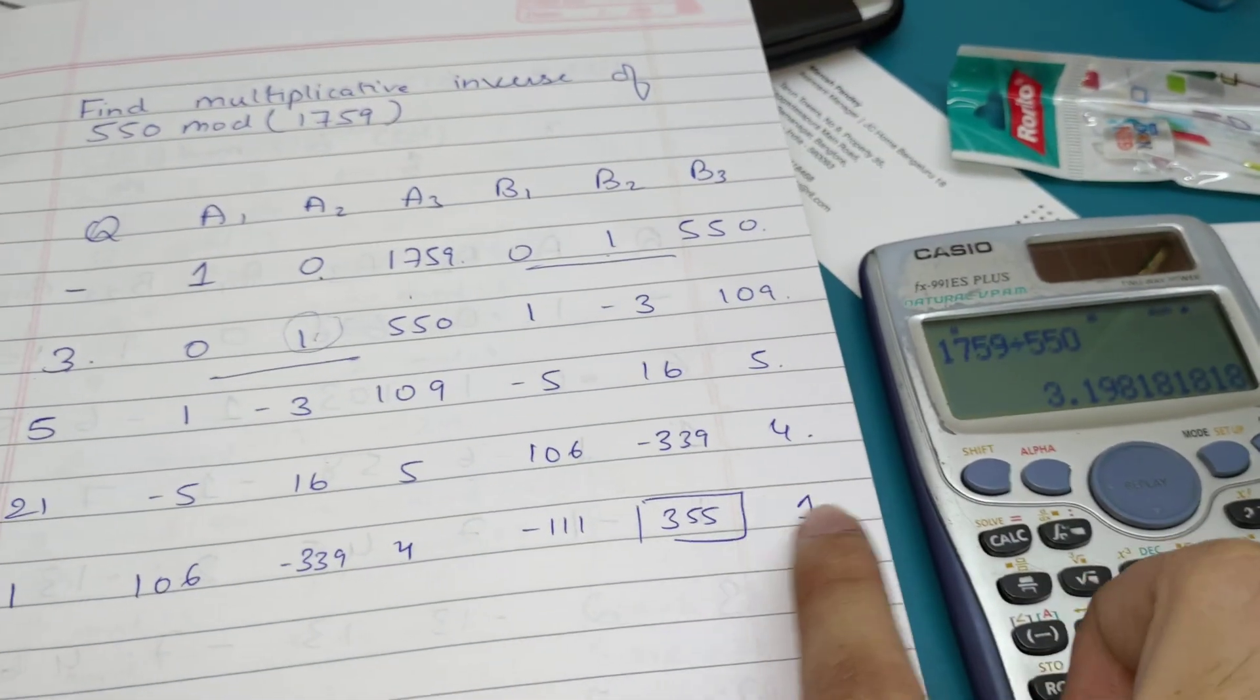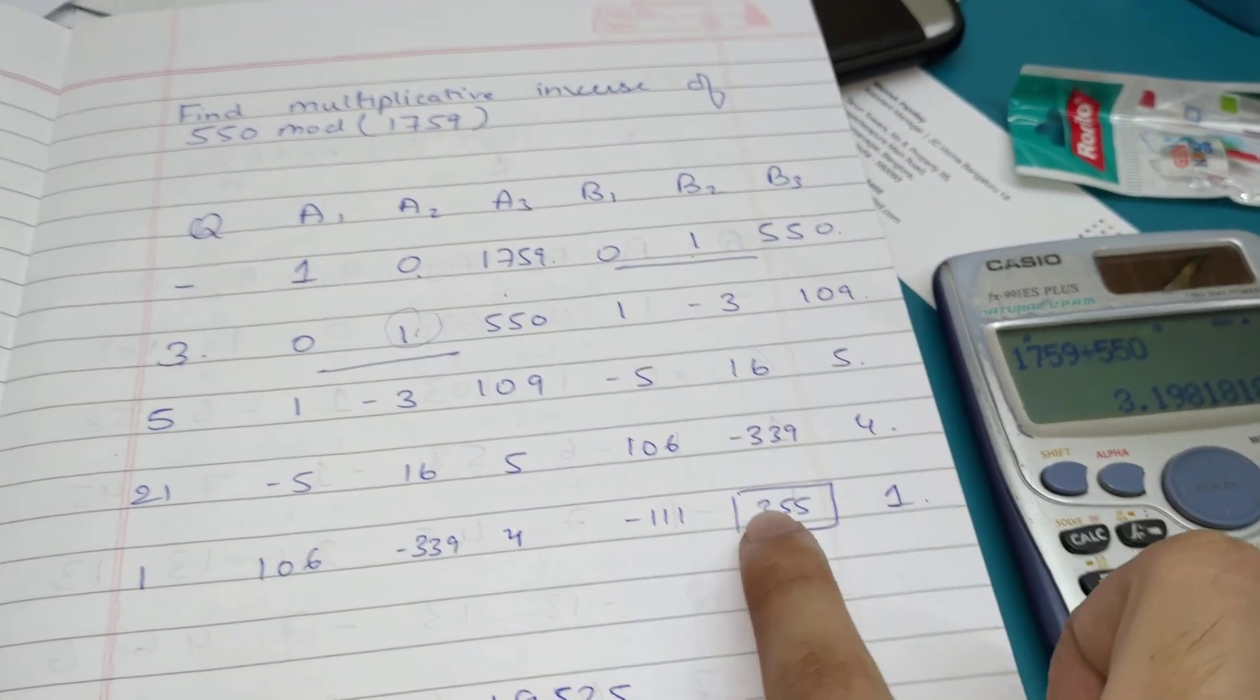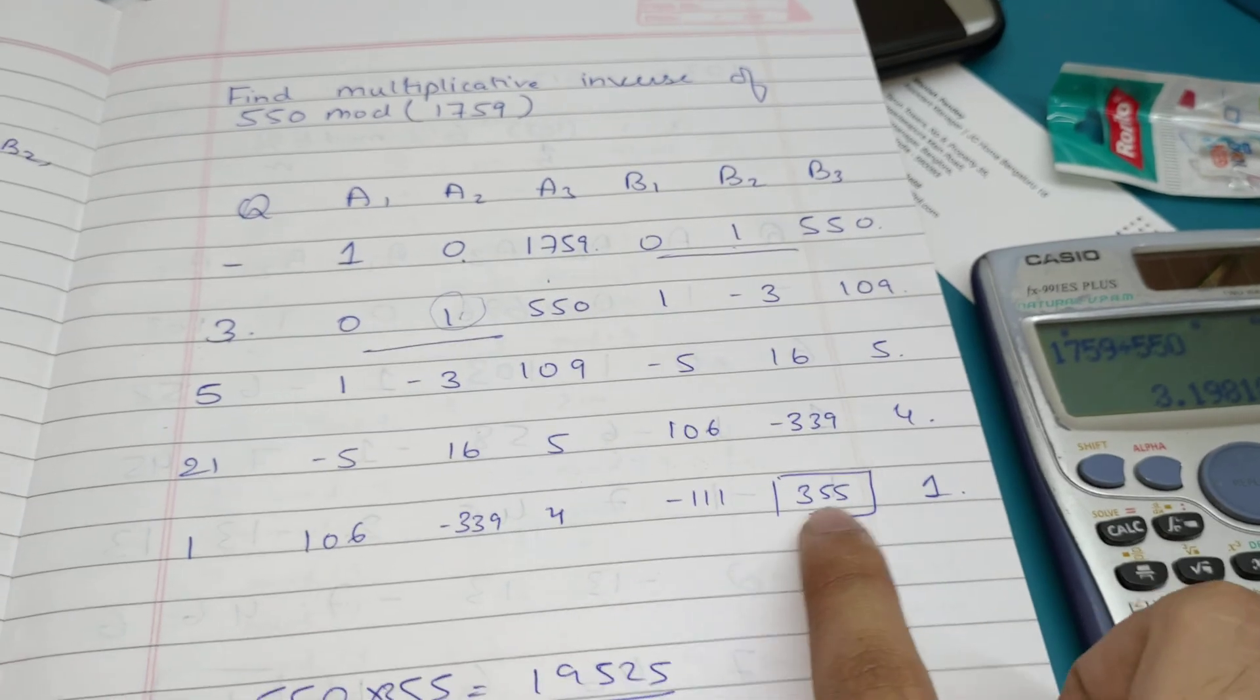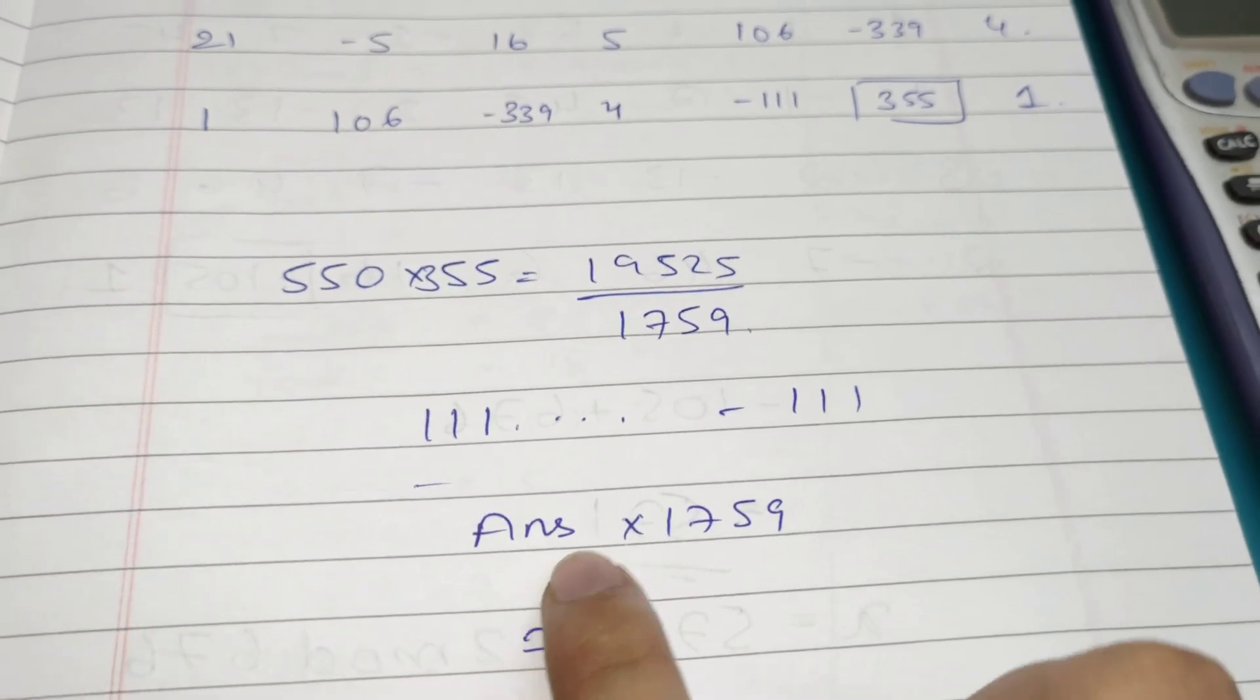...get this value as 1, whenever you get final 1, this is the inverse: 355 is the inverse. How do you check whether you got the correct answer or not? This is the checking method.